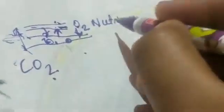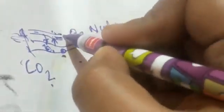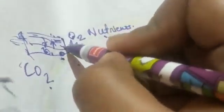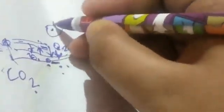Oxygen and nutrients are high in the blood and low in the tissue, so they flow from blood toward the tissue. Carbon dioxide and waste materials flow the other way. Hemoglobin in the blood carries the carbon dioxide, and waste products are carried in the plasma.